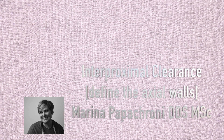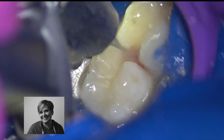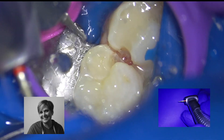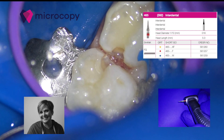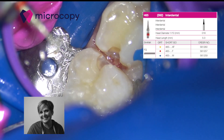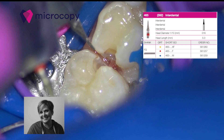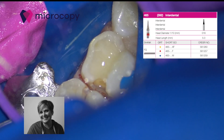Let's see a simple way to define axial walls in class 2. Using an interdental diamond, we make accessible palatal and buccal margins, which allow better cleaning, especially in high-risk patients.